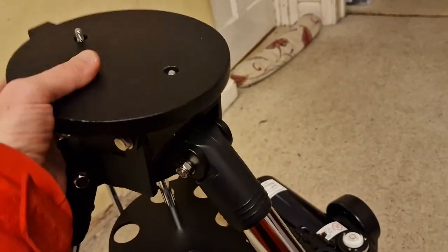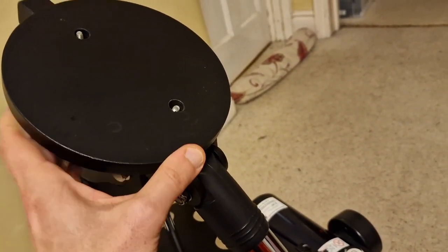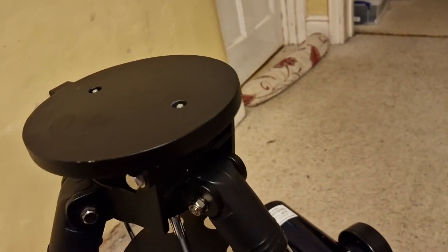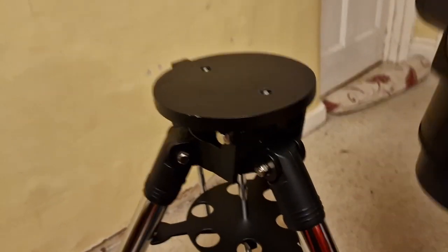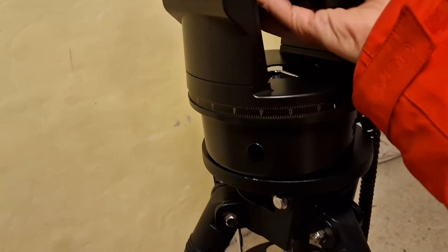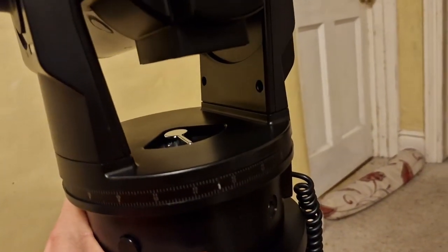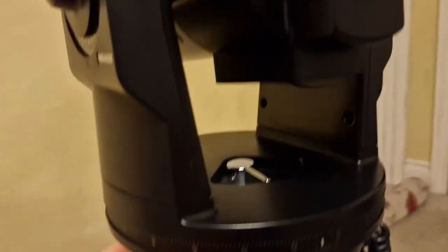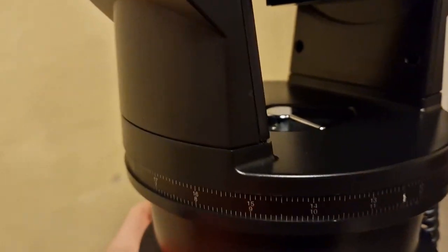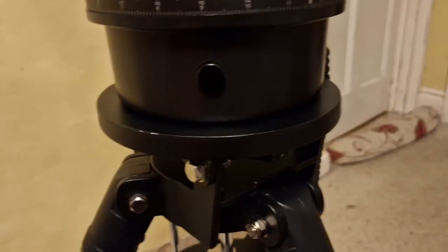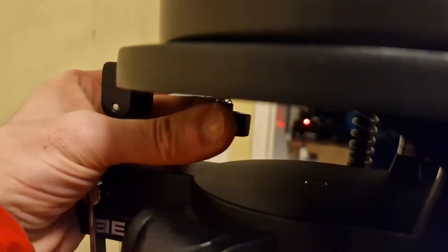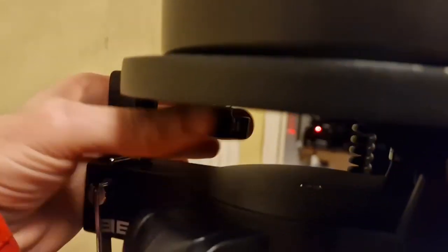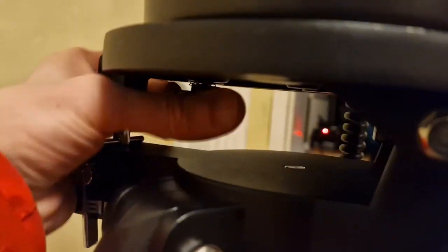Make it nice and flat, that makes the next bit easier. Take the telescope, plunk it on top, and put it pretty much in the middle. Try and locate the screws in the bottom. It can be a bit fiddly, but screw it into place underneath, having located those two into the hole below.